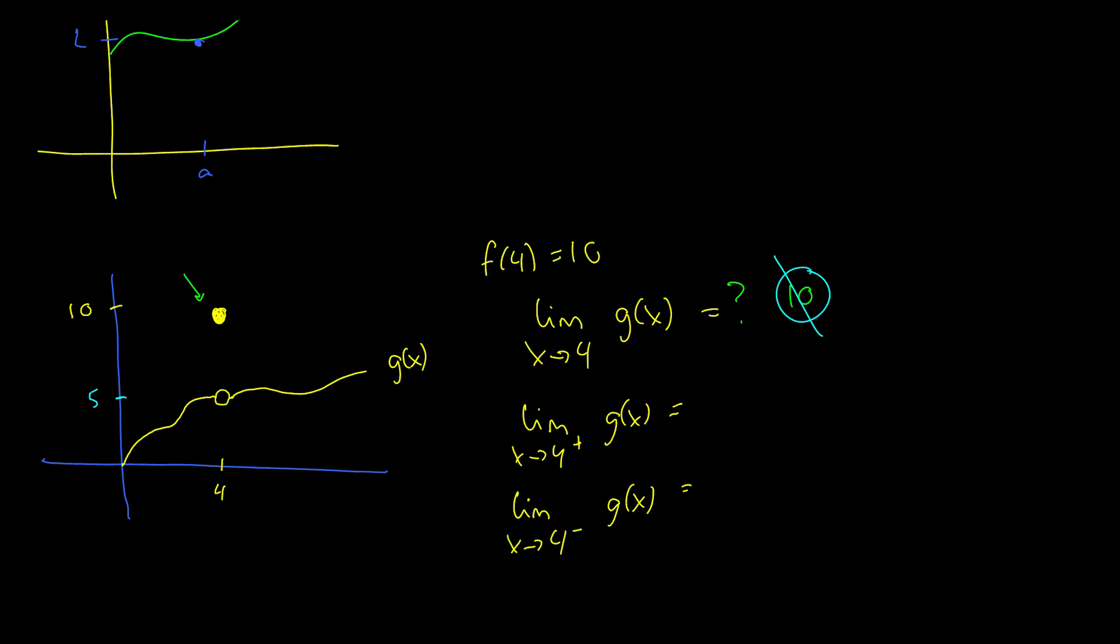this is at the point five. And we say, well, from the left, it's going to five, and then from the right, it's going to five. So what is the limit as x approaches four of g of x? Well, the answer to this one is five.